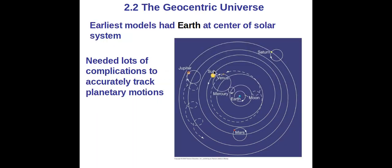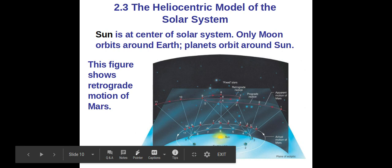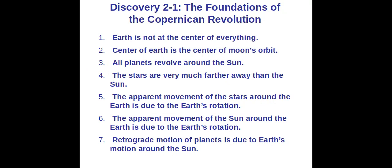This is if you remember Ptolemy's idea. This is kind of another version of that showing how they give the retrograde as we pass Mars in our orbit, since our orbit takes less time. So some of the foundations of the Copernican Revolution: the Earth is not at the center of everything, the center of the Earth is the center of the moon's orbit, all planets revolve around the sun, the stars are very much farther away than the sun, the apparent movement of the stars and sun around the Earth is due to the Earth's rotation, and retrograde motion of planets is due to Earth's motion around the sun.